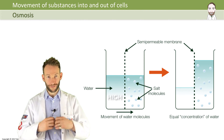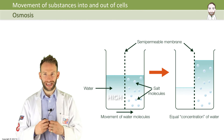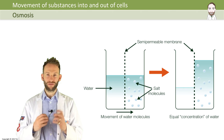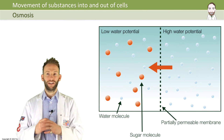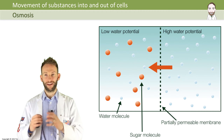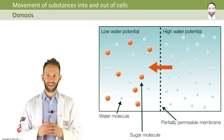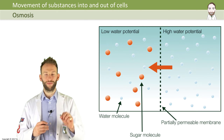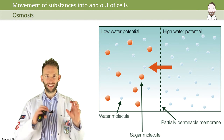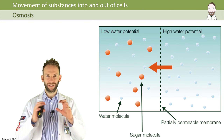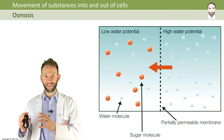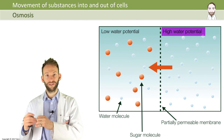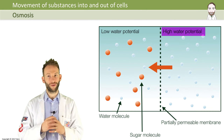All the water is free to move around and wants to move around. That is represented by the right-hand side of this diagram here: free water, high water potential, very, very dilute. On the left-hand side of this diagram you can see some orange sugar molecules. Those sugar molecules are interacting with the water, meaning that there isn't as much free water there to move around. So the right-hand side has a high water potential and the left-hand side has a low water potential.